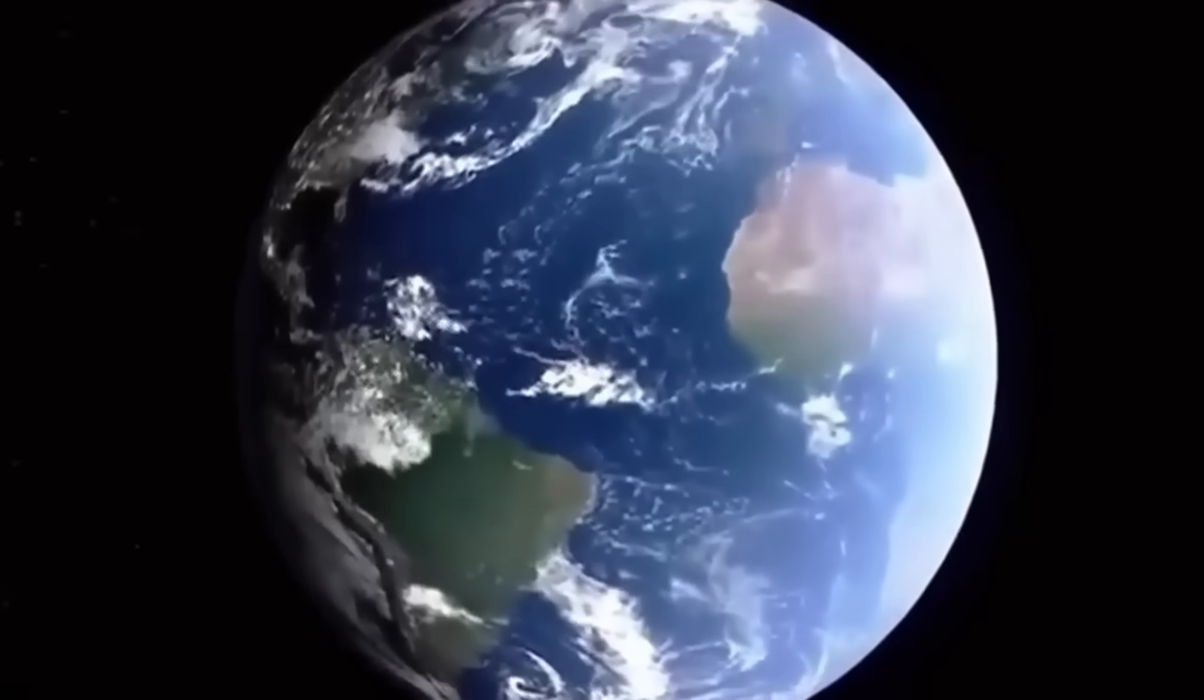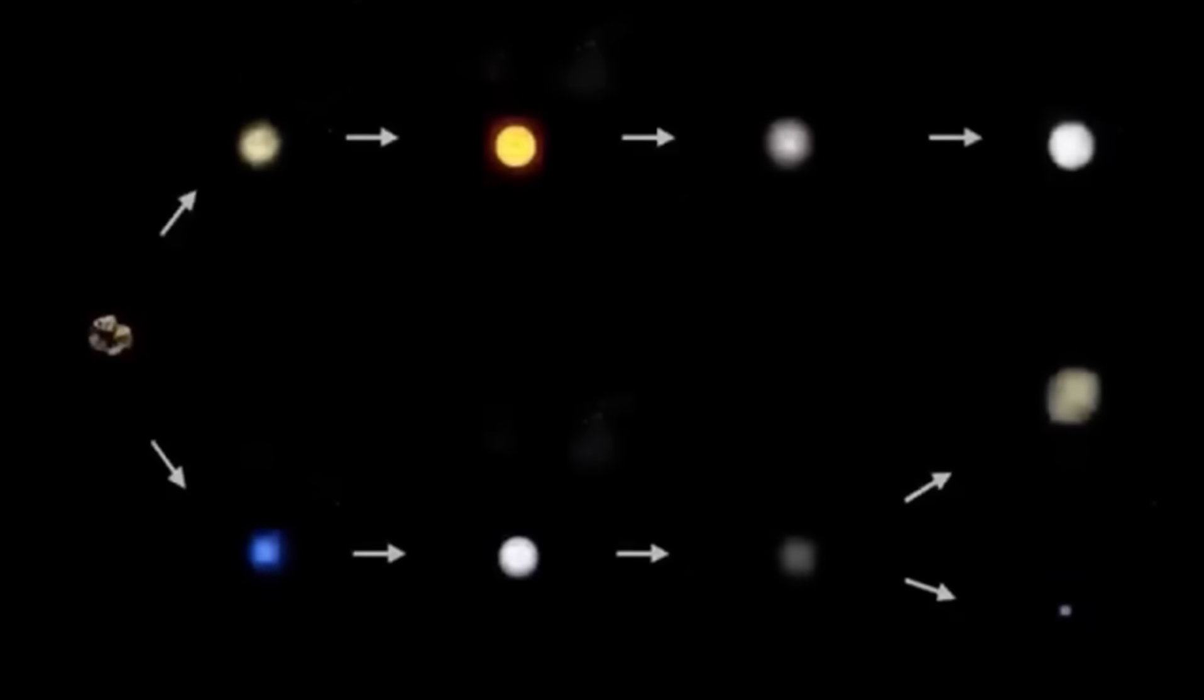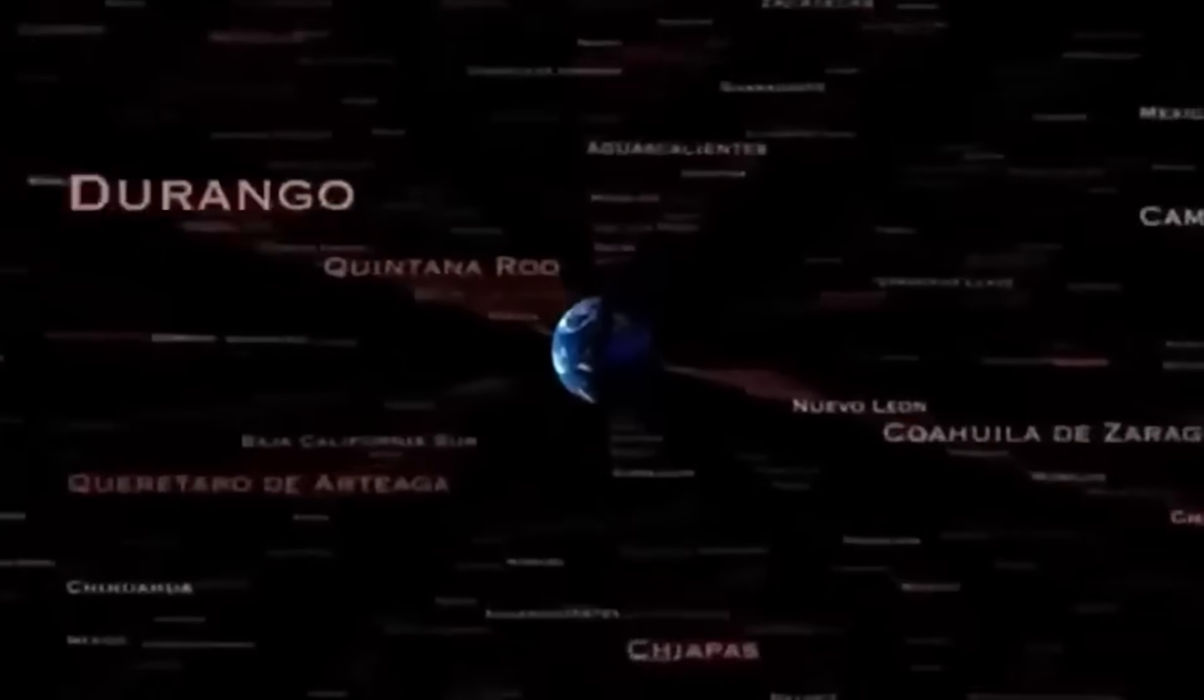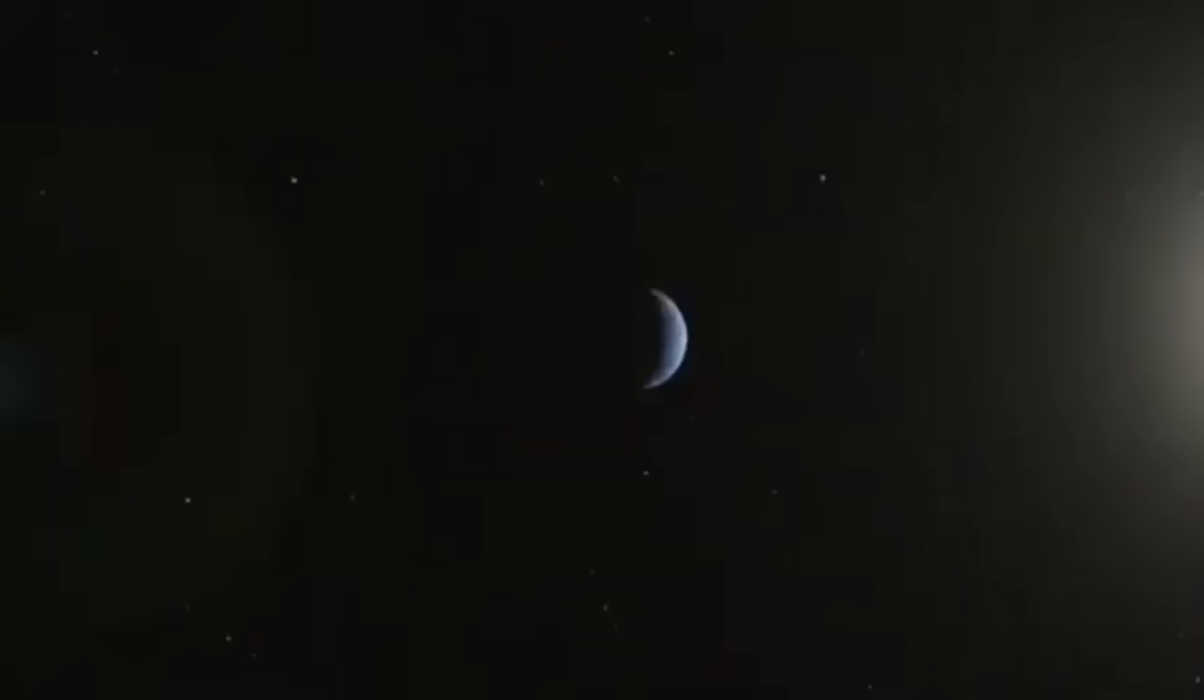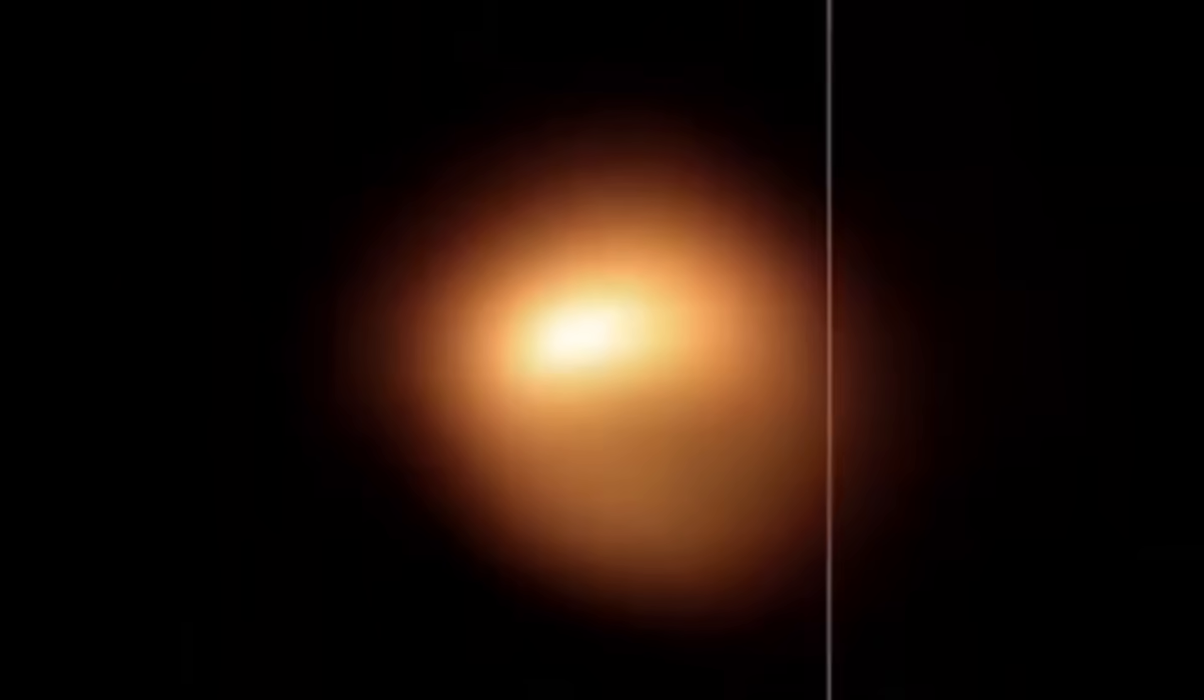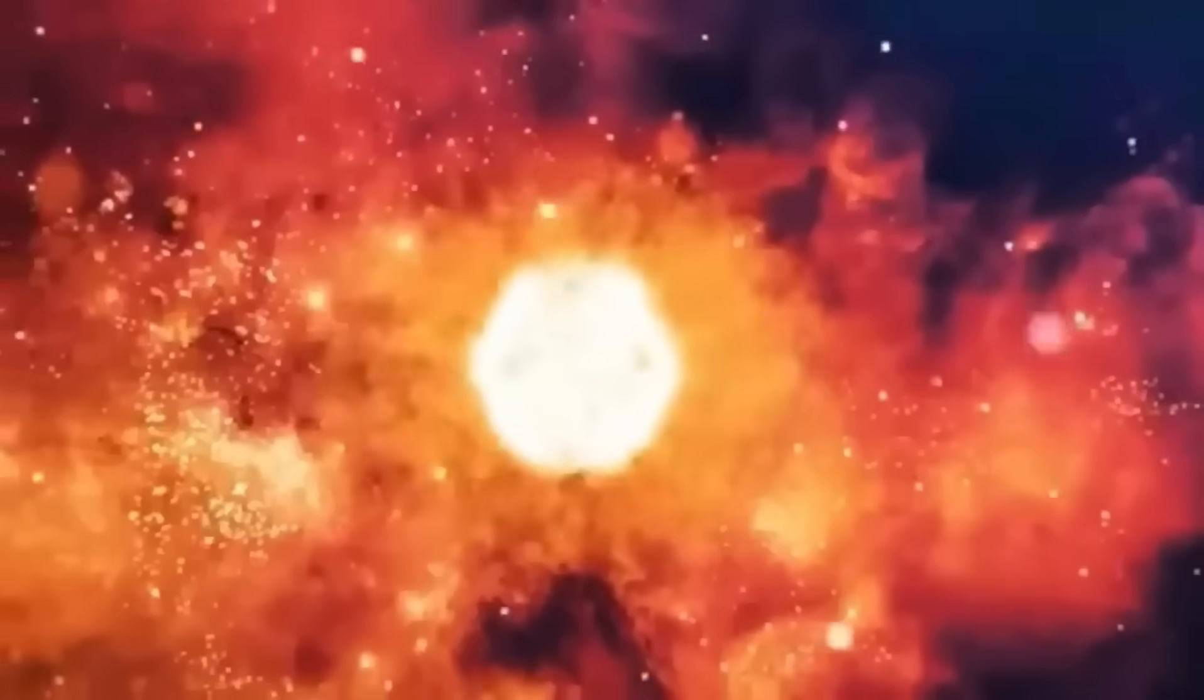Here's the thing. When we observe stars, we're not actually seeing them as they are in the present moment. The light we see from stars like Betelgeuse takes time to travel to Earth. Betelgeuse, one of the most fascinating stars in our night sky, is located approximately 725 light years away from Earth. This means that the light we observe from it today actually began its journey toward us around 725 years ago.